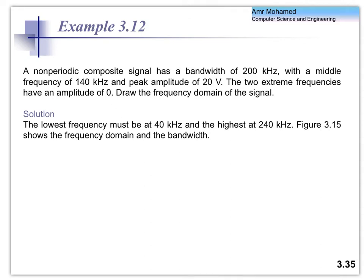Last time we talked about the important parameters of a signal — three important parameters. The students recalled: frequency, phase, and amplitude. We also talked about important metrics to describe the signal in the frequency domain, which is bandwidth. We discussed Fourier theory, and the fact that periodic signals can be represented in the frequency domain by discrete samples, whereas non-periodic signals are represented as a continuous signal in the frequency domain.